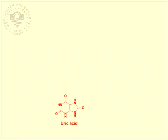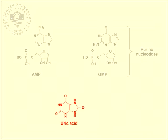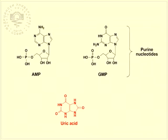Hyperuricemia is a condition with elevated levels of uric acid in the blood. Uric acid is a product of the degradation of purine nucleotides in the body.